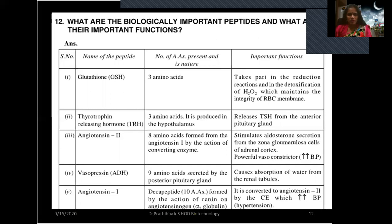Angiotensin I is a decapeptide containing 10 amino acids, formed by the action of renin on angiotensinogen, which is an alpha globulin. It is converted to angiotensin II by the converting enzyme, which increases blood pressure or causes hypertension.